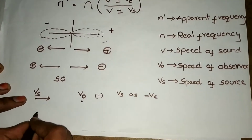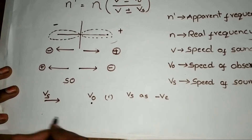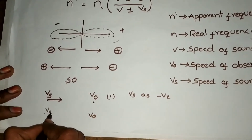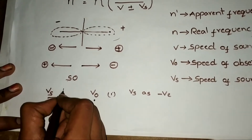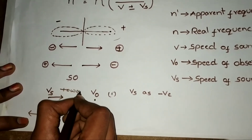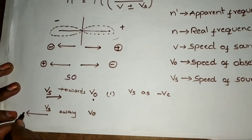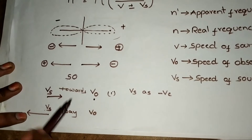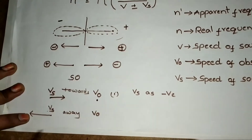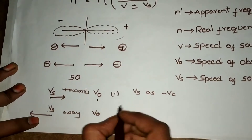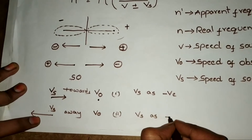Suppose the source is moving away from the observer — so here is the observer, here is the source, moving in the negative direction away. Normally in that negative direction you would take negative, but for this trick you take Vs as positive.